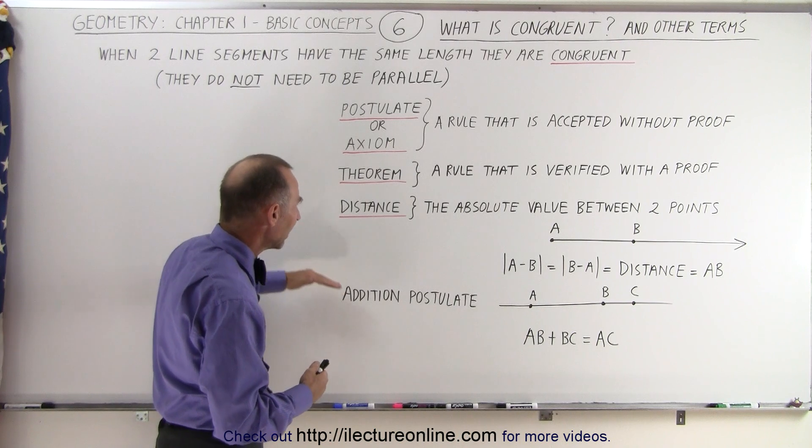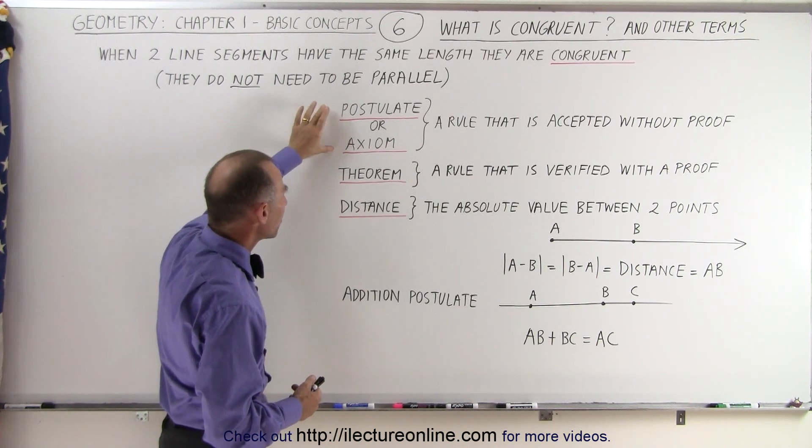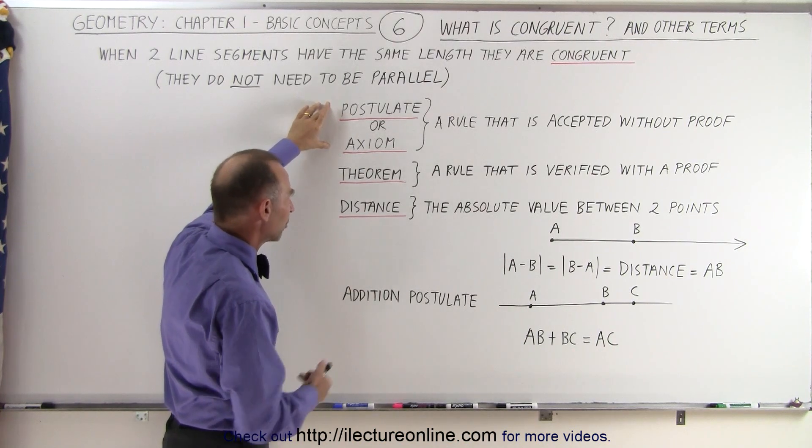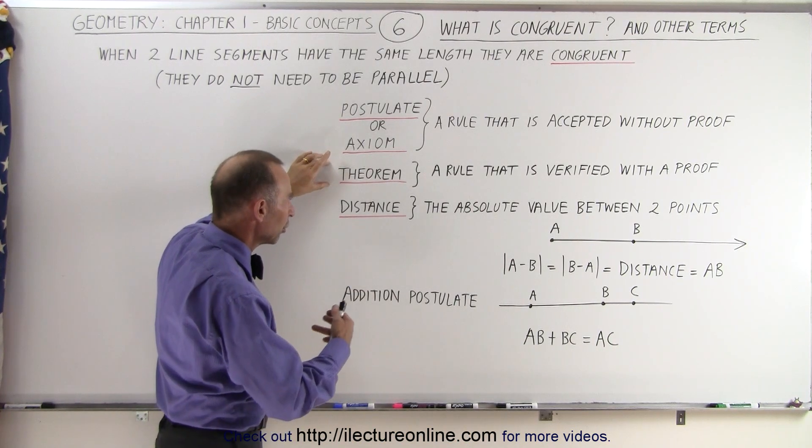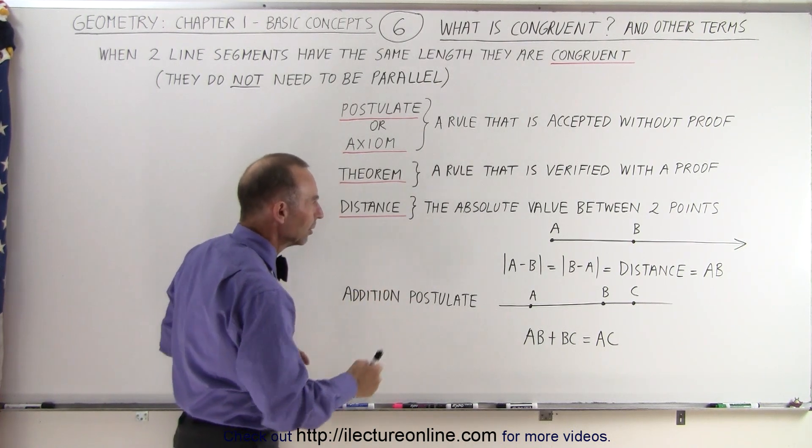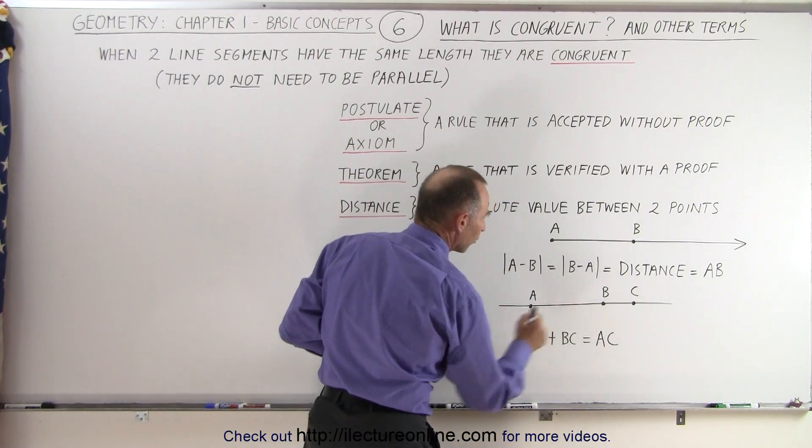And so here we have then the definition of these five terms. Notice that axiom and postulate are basically the same thing. It's simply a rule that we do not need to prove. A theorem is something we look for to prove, and the distance is simply the absolute value of the difference between the two points.